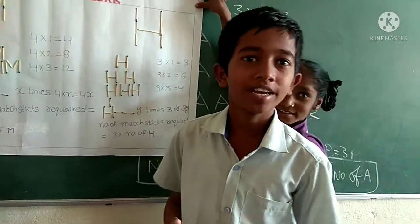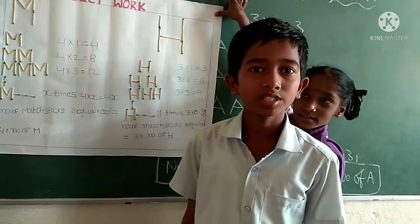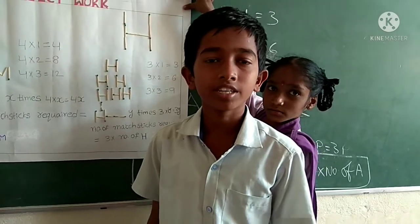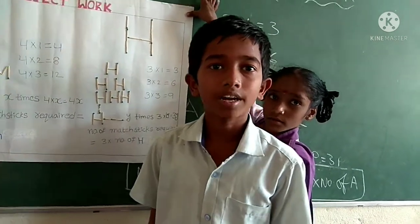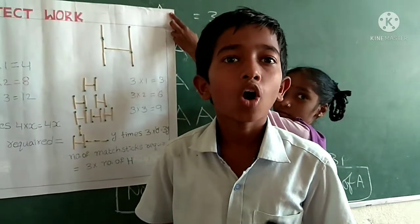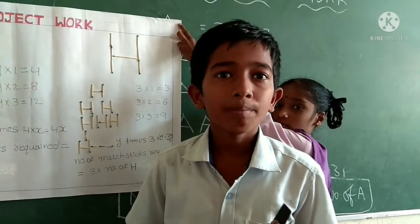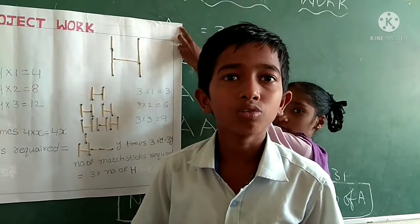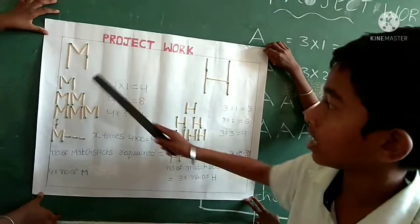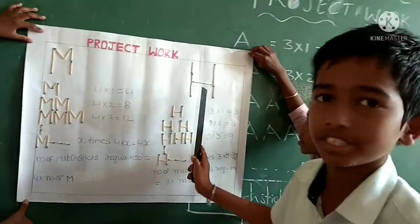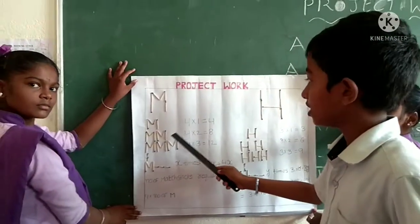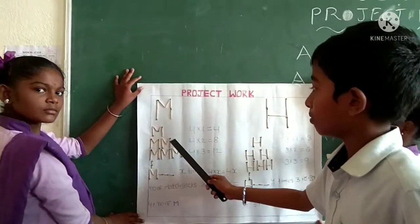My name is G. Zaidi. I am studying 6th class at JPRS School, Anantapuram. I made a project on Algebra Pattern Making Rules. Now I do two alphabets, M and H. For making M, we need 4 matchsticks.